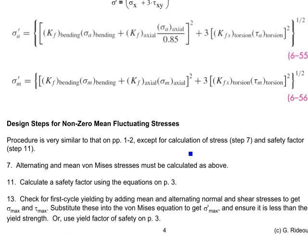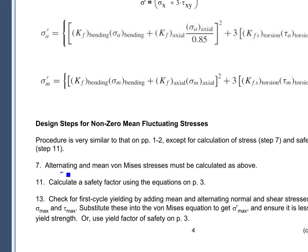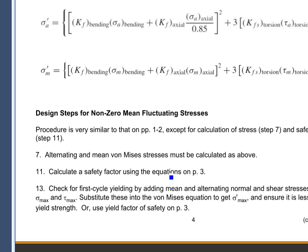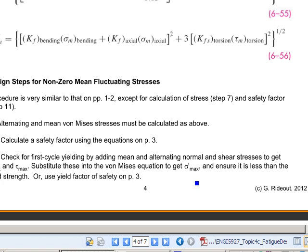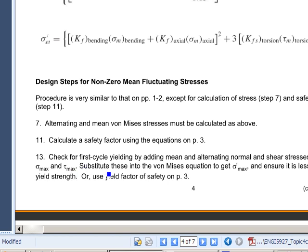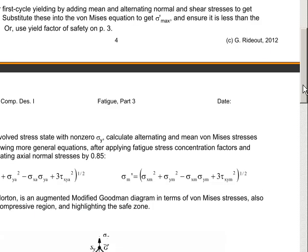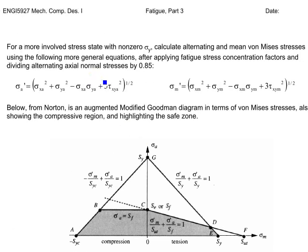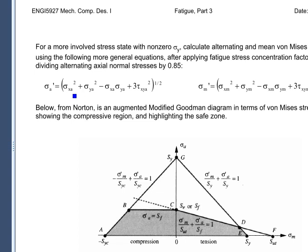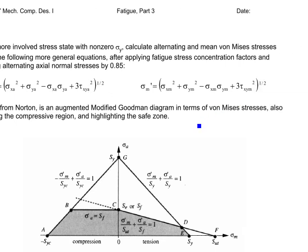When we have non-zero fluctuating stress, we find our alternating and mean von Mises stresses — sigma_a' and sigma_m' — then calculate the safety factor using the equations derived earlier. For more involved stress states with sigma_x, sigma_y, and tau_xy, we substitute into the full von Mises equation accordingly, dividing any axial alternating normal stresses by 0.85 whether they act in the x or y direction.